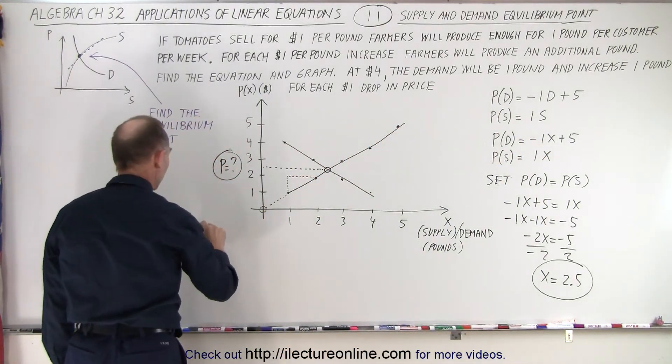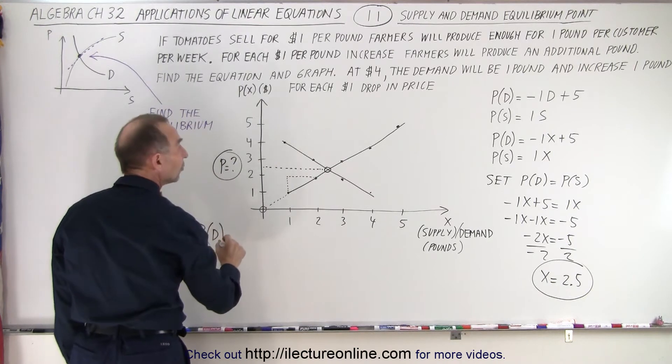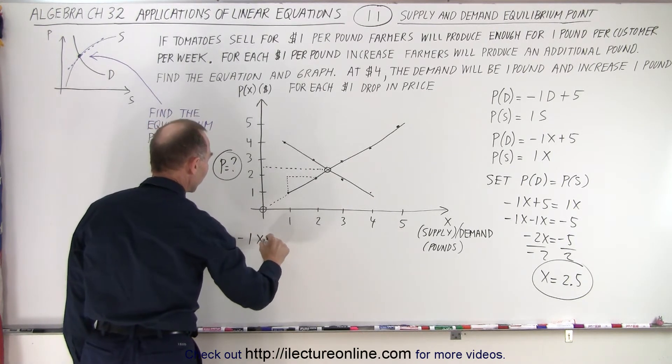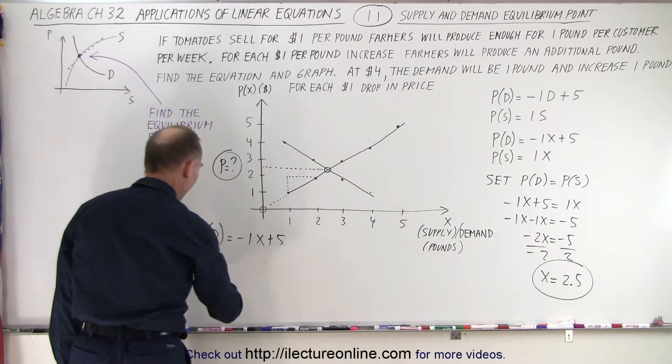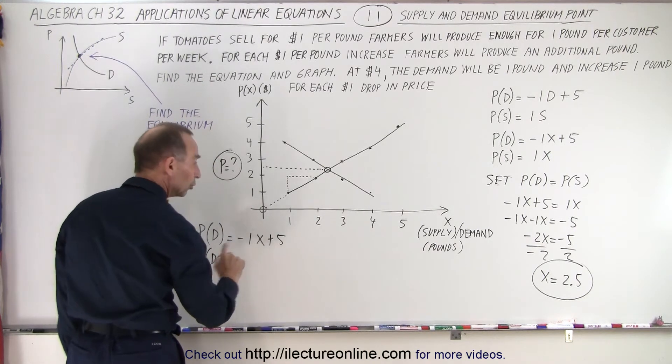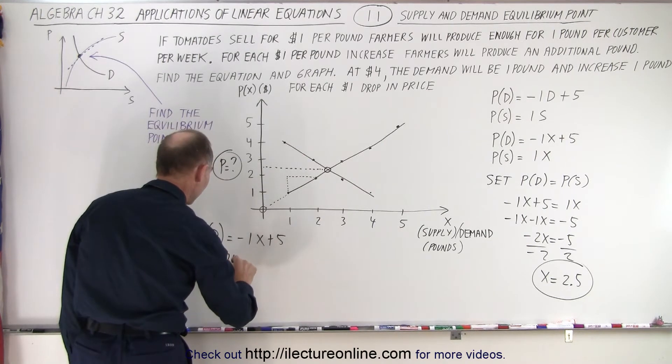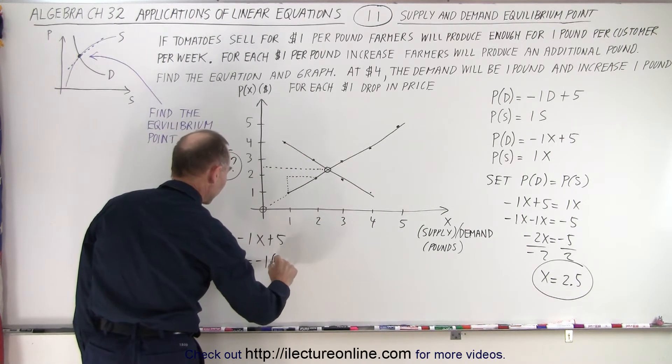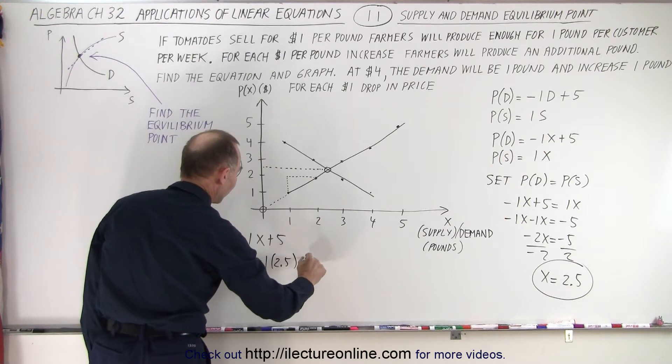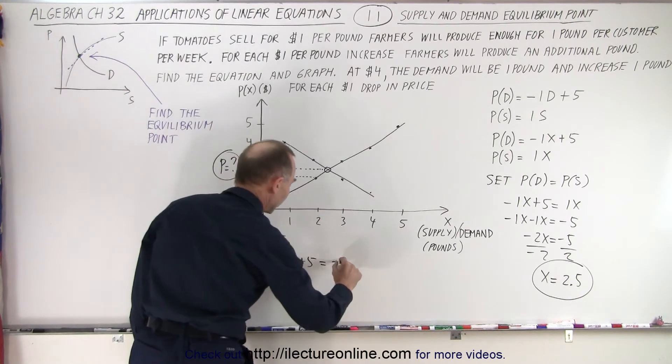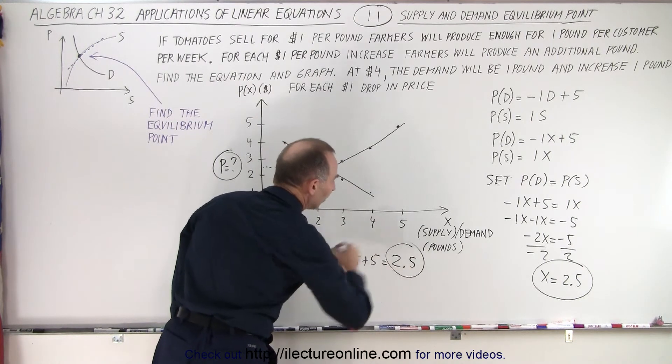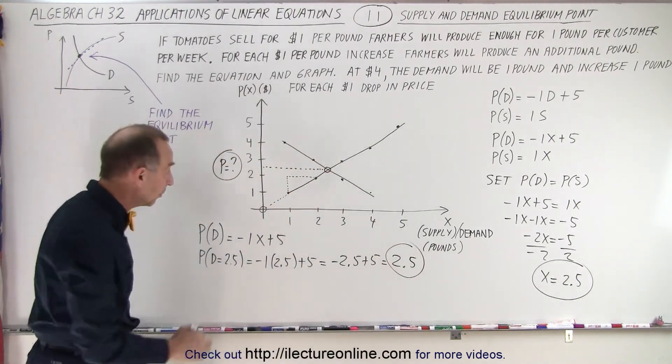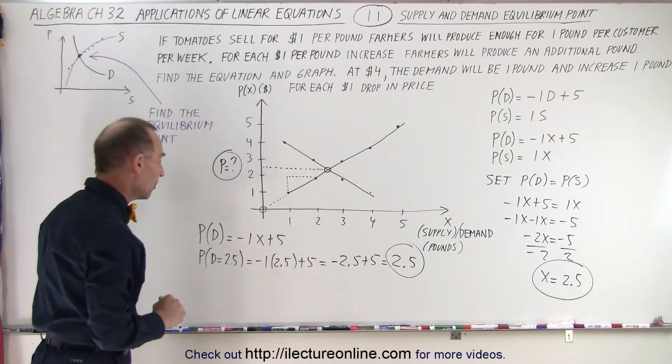So the demand equation is equal to minus 1 times x plus 5. So the price, when the demand is equal to 2.5, is equal to minus 1 times 2.5 plus 5. That would be equal to minus 2.5 plus 5, which is equal to 2.5. In other words, if the price is $2.50 per pound, the supply would equal the demand.